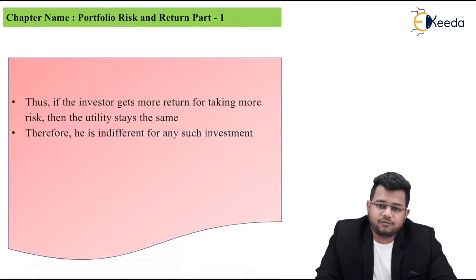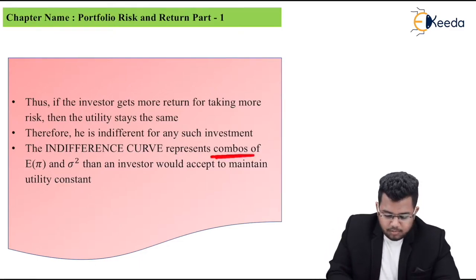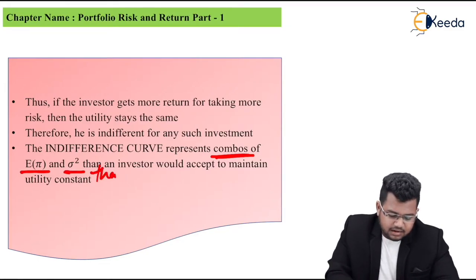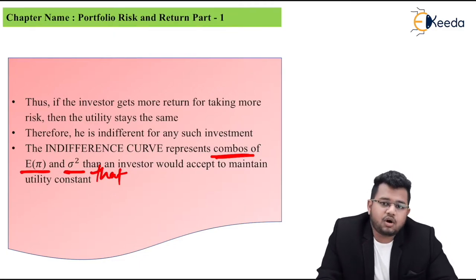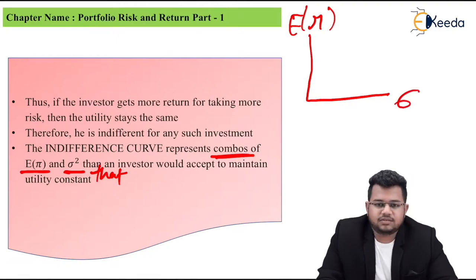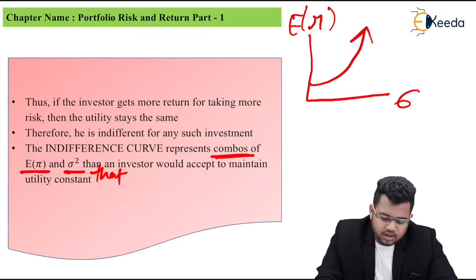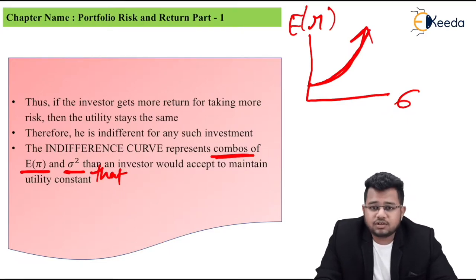Therefore, he is indifferent for any such investment. The indifference curve represents combinations of various expected returns and variance that an investor would accept to maintain the utility constant. An indifference curve will be formed. Again, expected return and standard deviation or risk. If you plot this on a graph, an upward sloping curve will form. Why upward sloping? Because as return increases, risk also increases. And if risk increases, they need more return since they're risk averse, so it goes upward.